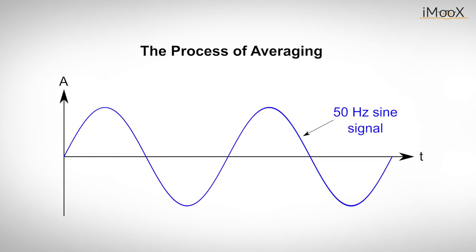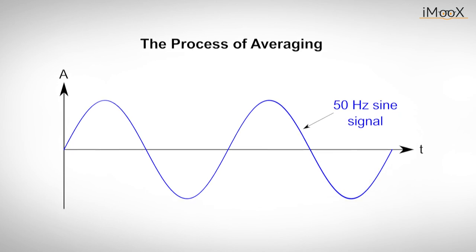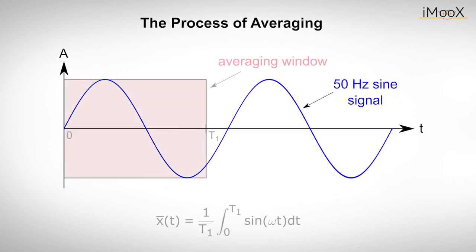Let us assume that this sinusoidal signal at 50 Hz is our input signal. We can now freely choose our averaging window. If we set it between 0 and T1 and calculate the mean value, this mathematically corresponds to the integration of the sine function between the two time intervals.